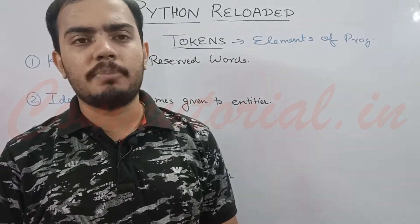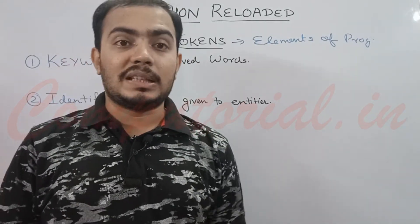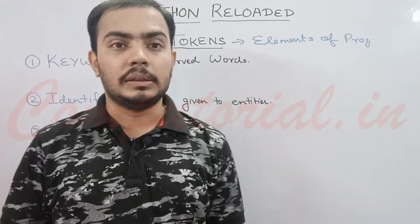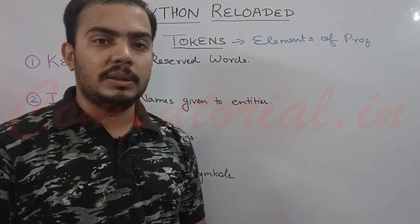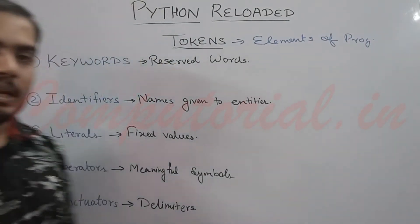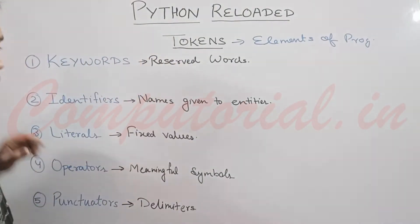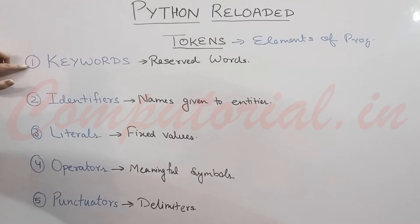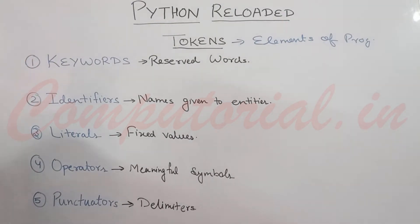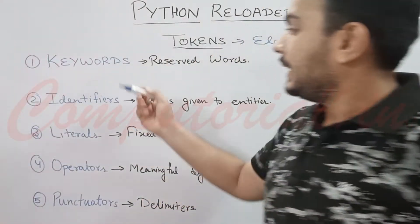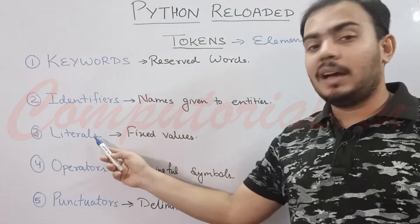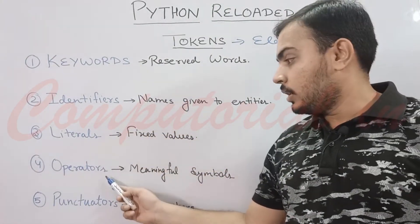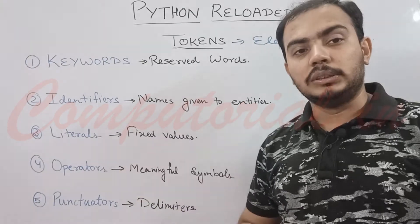Now let's talk about the classification of tokens in Python. We have five categories of tokens: first we have keywords, then we have identifiers, we have literals, operators, and punctuators.